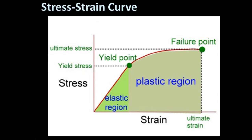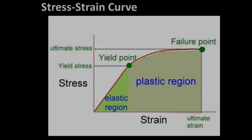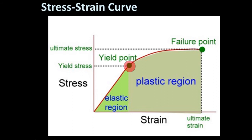How do you interpret a stress-strain curve? For a certain period of time, a material will be able to undergo stress without permanently changing shape. This area of the stress-strain curve is known as the elastic region. After a certain point, called the yield point, the material will no longer be able to withstand additional stress without permanently changing its shape.